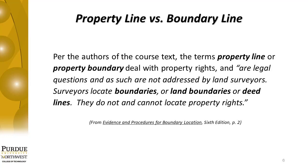We want to describe the difference between the terms property line and boundary line, with emphasis on how the authors use those terms in this text. Most people consider them synonymous, but the authors use them differently. Per the course text, the terms property line or property boundary deal with property rights and are legal questions not addressed by land surveyors. Surveyors locate boundaries or deed lines — they do not and cannot locate property rights. The boundary is the line described in the property description; the property line is where people actually own to, which could be greater or less than the described boundary line.